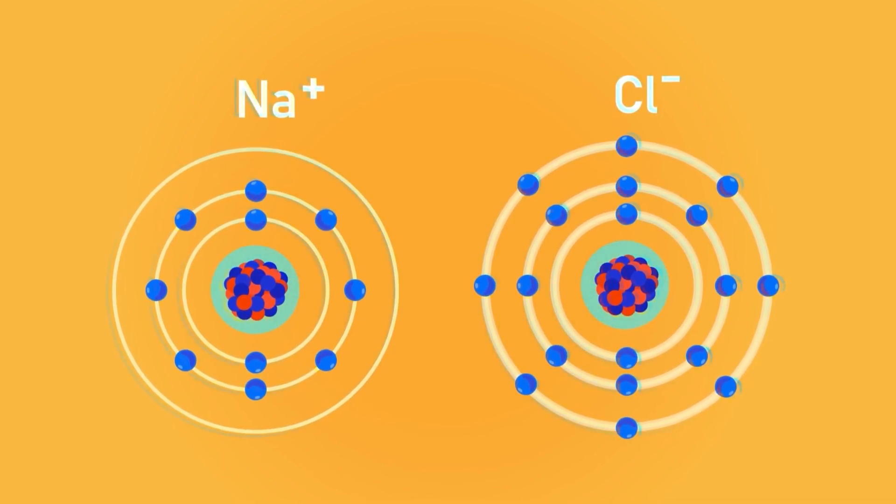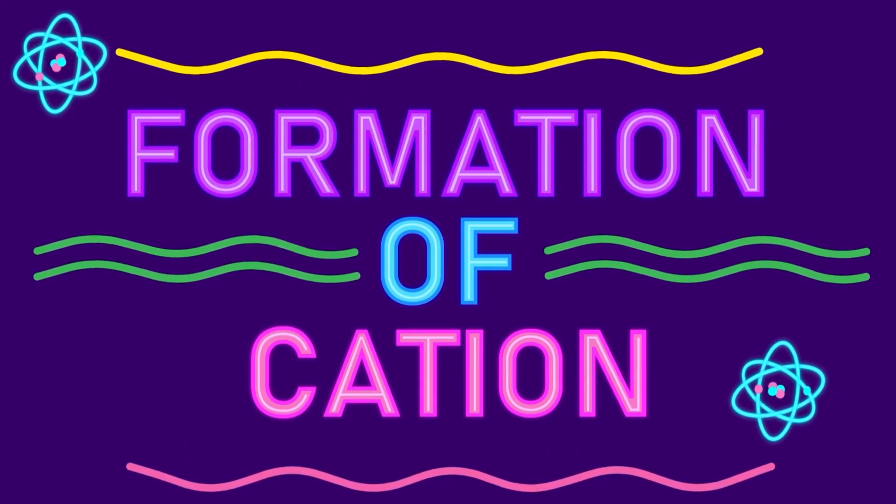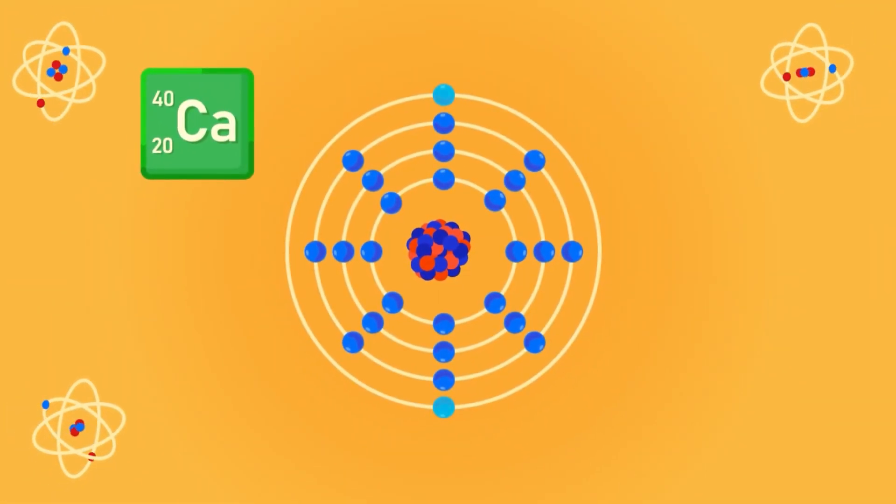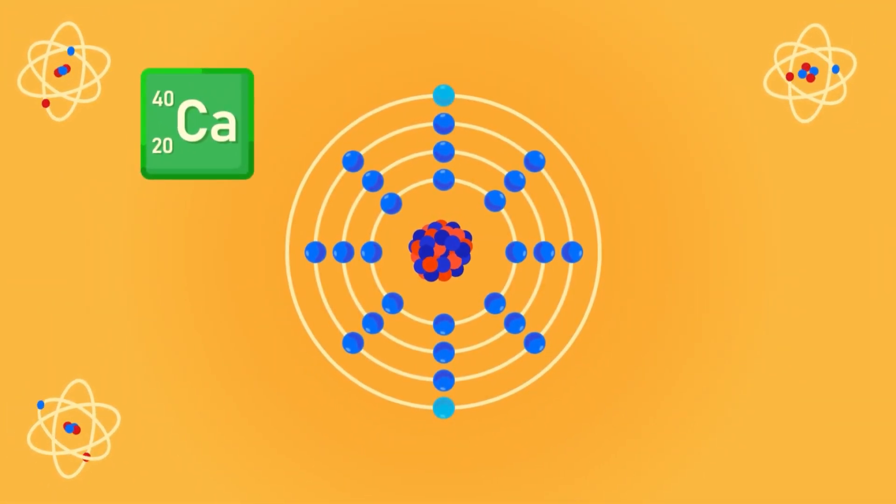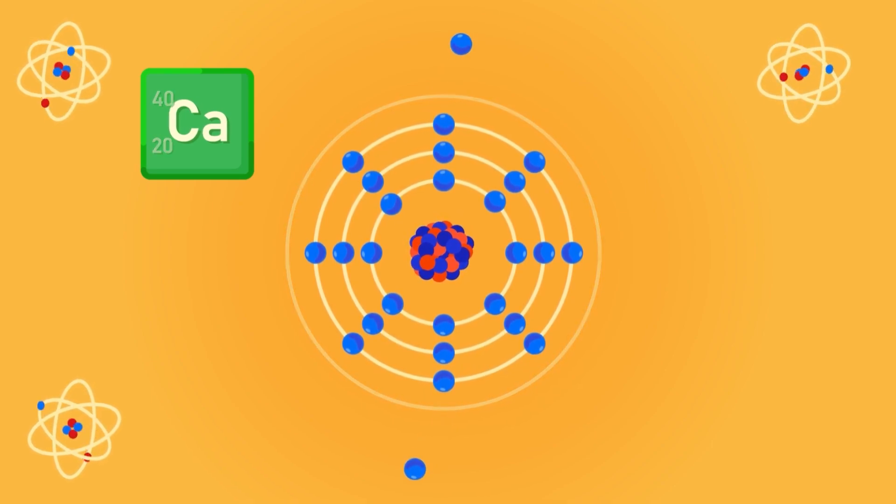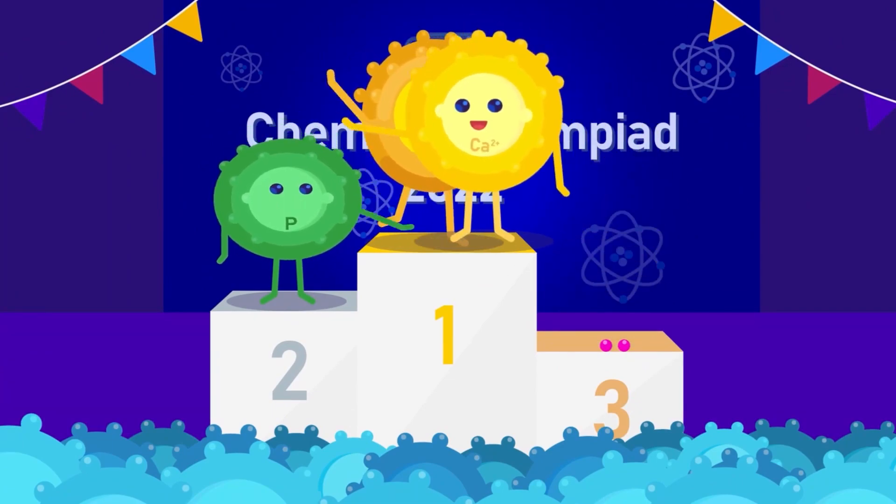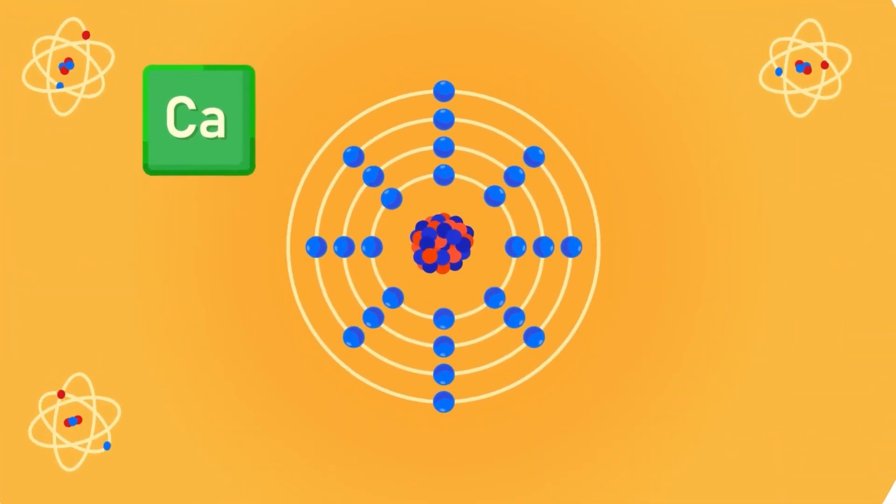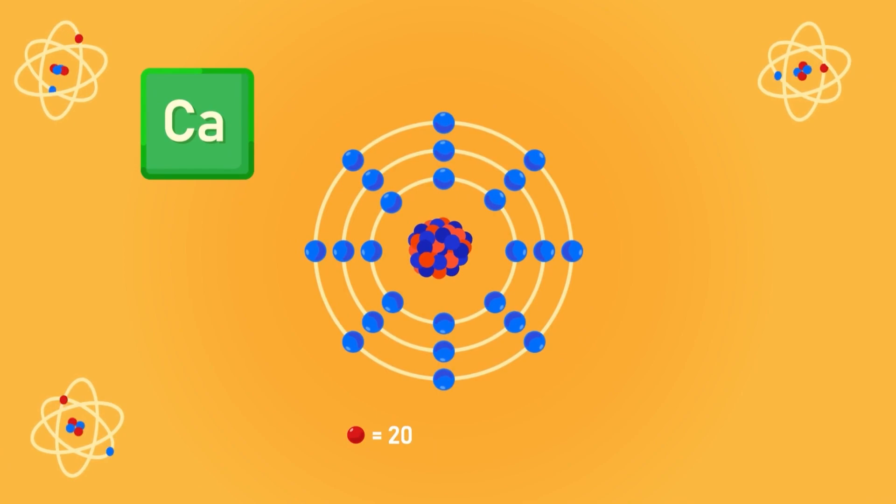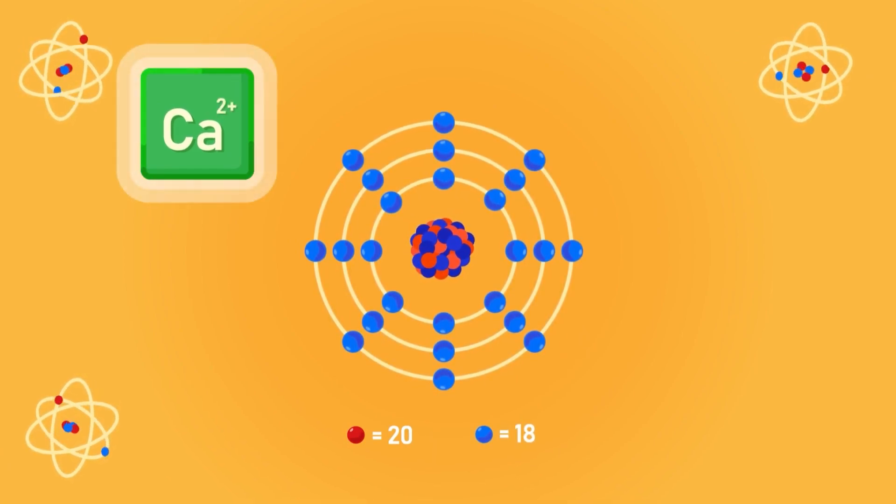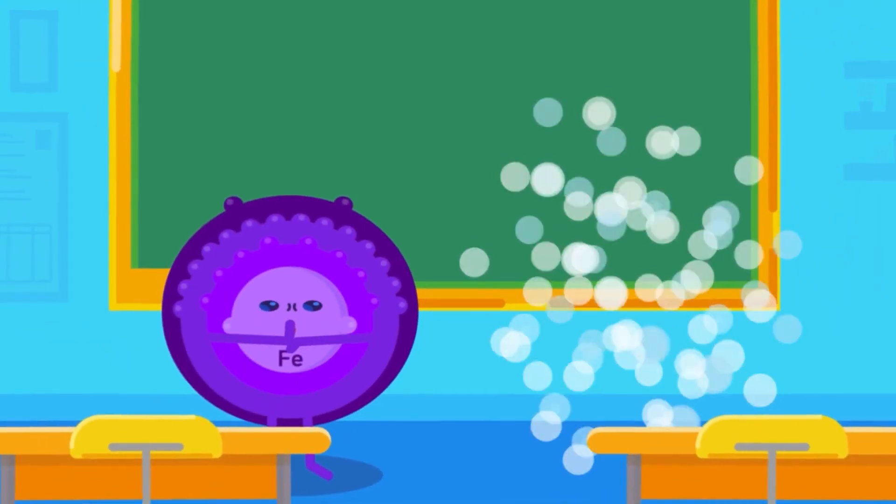Formation of cations: Atoms of metals usually have only a few valence electrons, therefore they tend to lose electrons to form cations. In this way they become stable just like a noble gas. When an atom loses electrons, it has more protons than electrons, making the overall charge of cations positive.